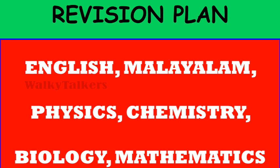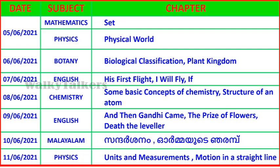Mathematics and Physics are part of the first set. For Biology, the first part of the list includes Biological Classification and Plant Kingdom. For English, the chapters include 'His First Flight' and 'I Will Fly If.'